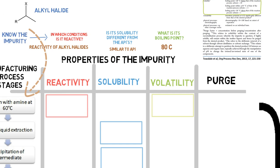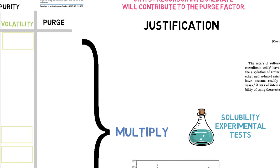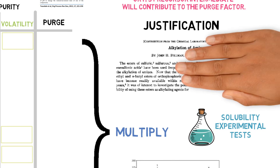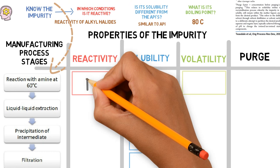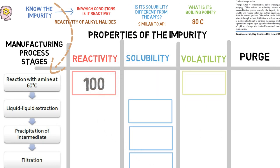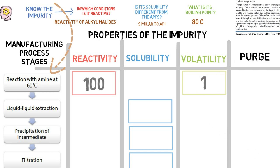In this stage, the reaction conditions are ideal for consumption of this impurity. It is highly reactive with amines, which is well described in the literature, so a purge factor of 100 can be given for reactivity. The temperature of 60 degrees is below the impurity's boiling point, so it will not volatilize. Hence, a factor of 1 is given for volatility.